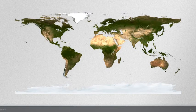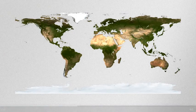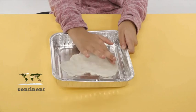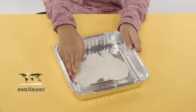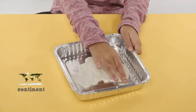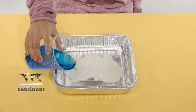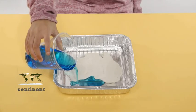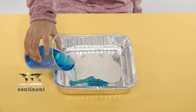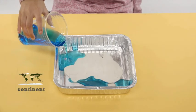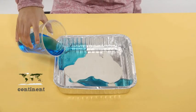Use the image of the continent as a guide to build a model of a continent with clay. Add water to model the location of water around the continent. In this video, we added some blue food coloring to the water to make it more visible.